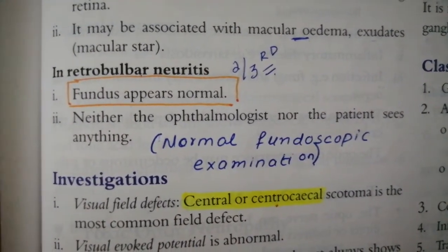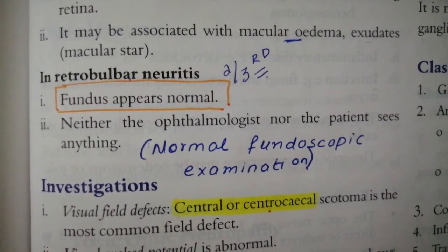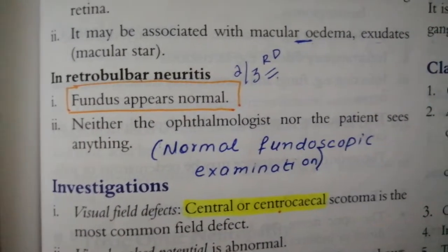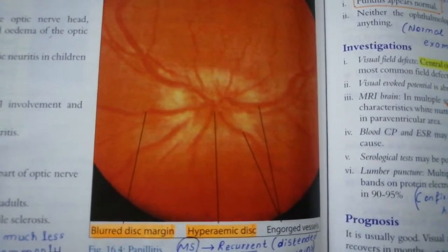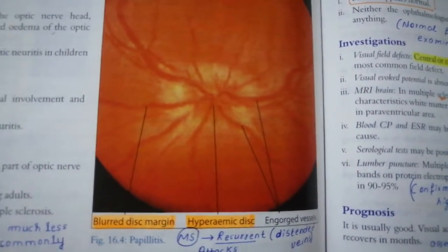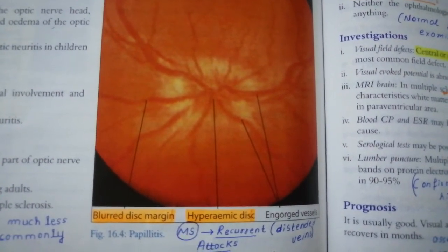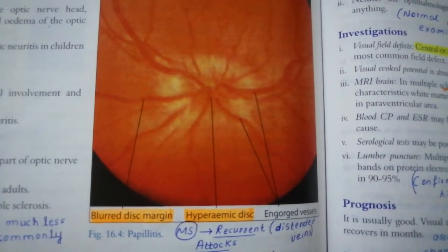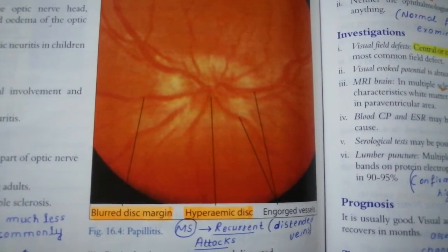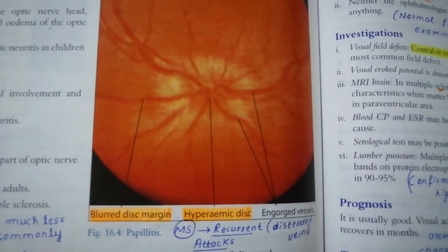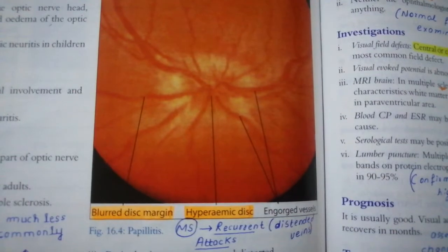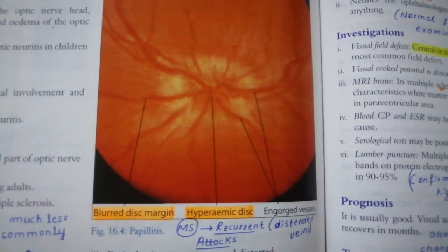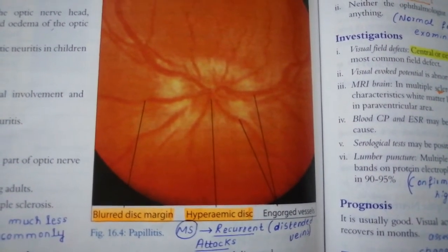In the papillitis cases, the fundoscopic picture shows blurring of disc margins, generalized swelling, hyperemia or redness of the disc, and distended veins. The vessels appear engorged. In neuroretinitis, there is additionally edema around the optic nerve.